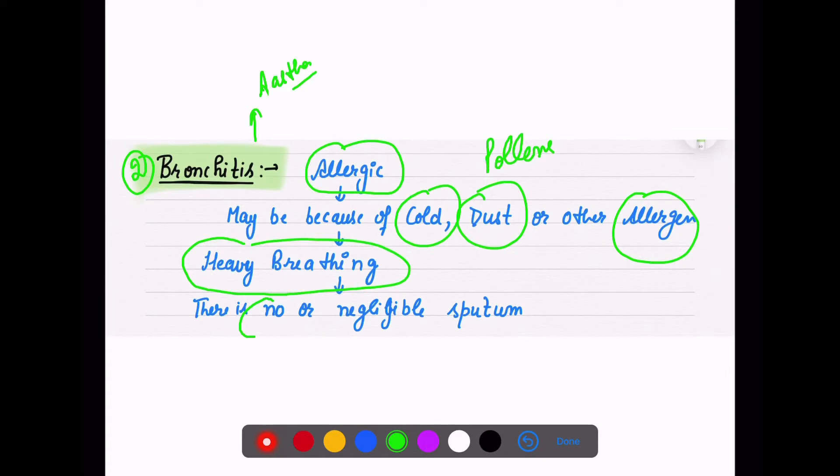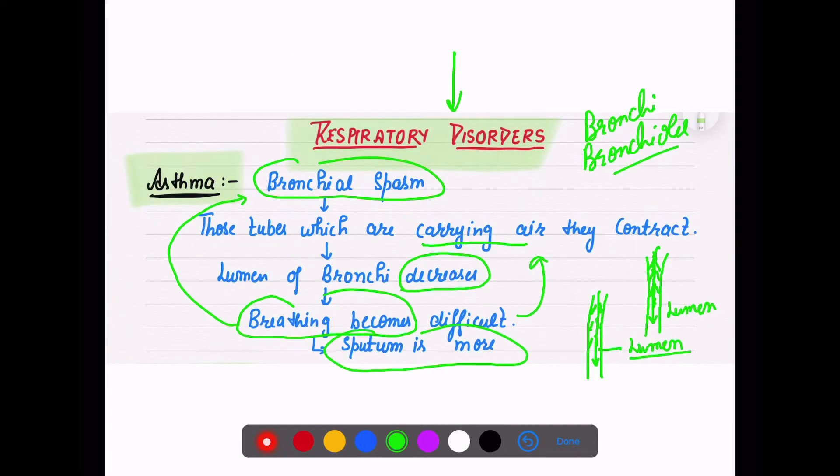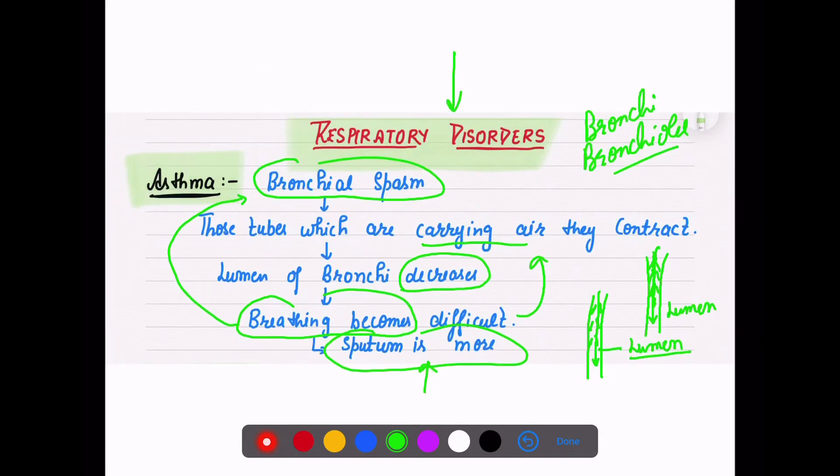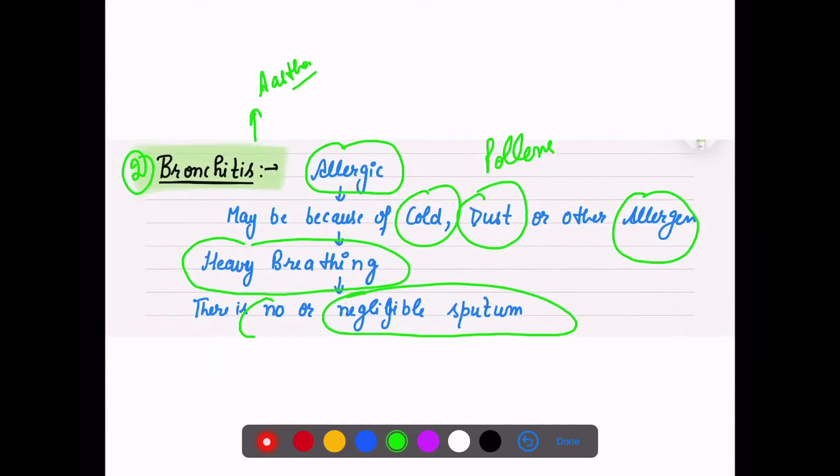In bronchitis there is also heavy breathing, but one main difference is that in asthma the sputum is more. When you cough, sputum comes outside - in asthma more sputum is there, but in bronchitis very less sputum is produced. Asthma also gets aggravated due to certain allergic reasons, but bronchitis specifically is due to allergen factors.